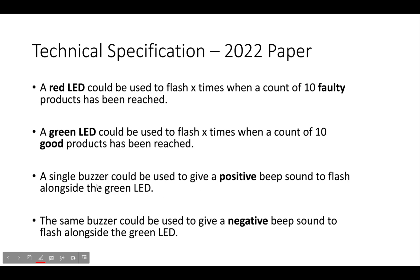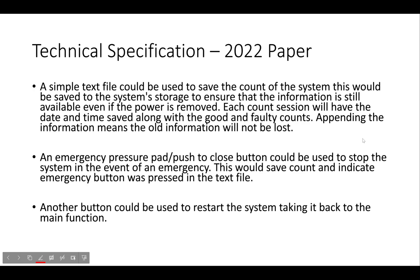A single buzzer can give a positive beep whenever the green LED goes off — for example a high beep for a good product and a low beep for a bad one, or two beeps for good and three for bad. The technical specification is very detailed and you don't actually have to hit every single point in your technical specification. If you don't achieve something later, you can note why — maybe it wasn't necessary, too technical, or out of the realms of possibility at the time.